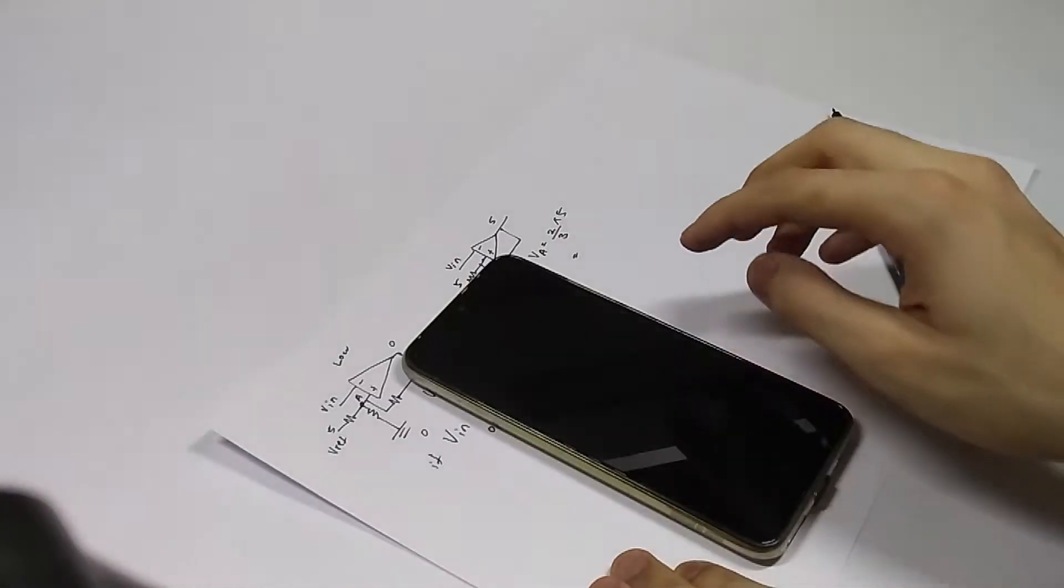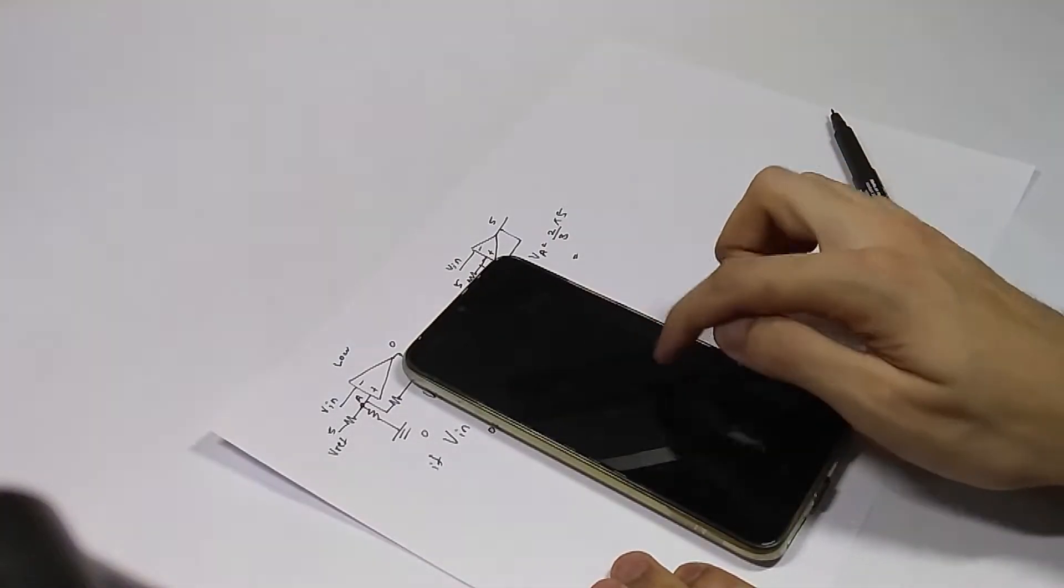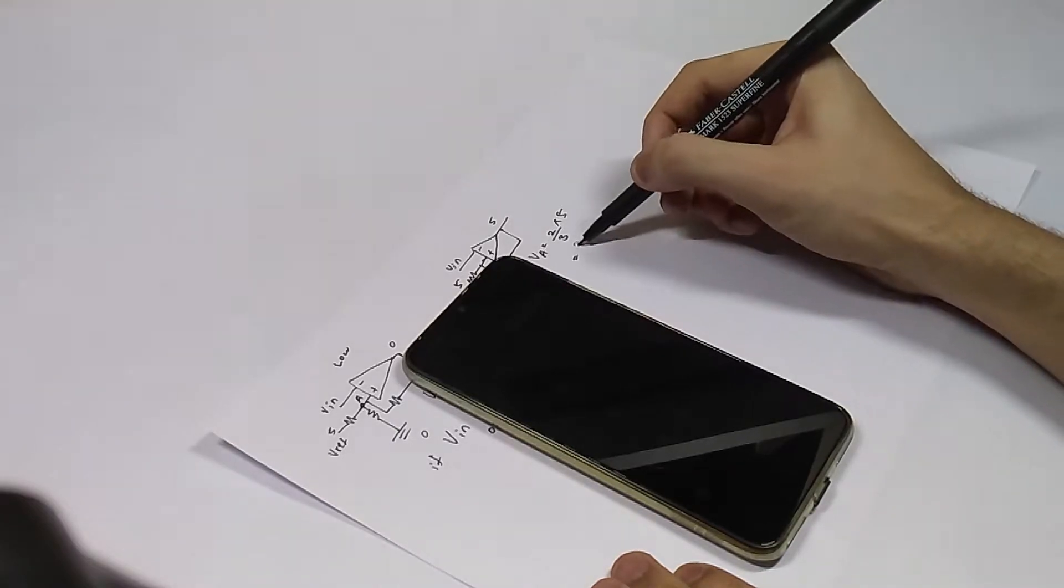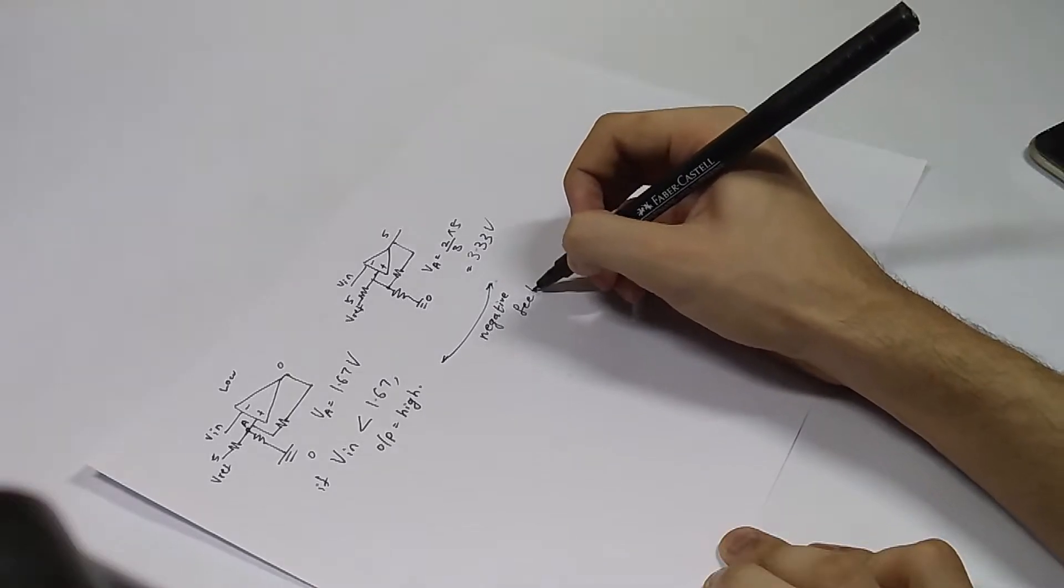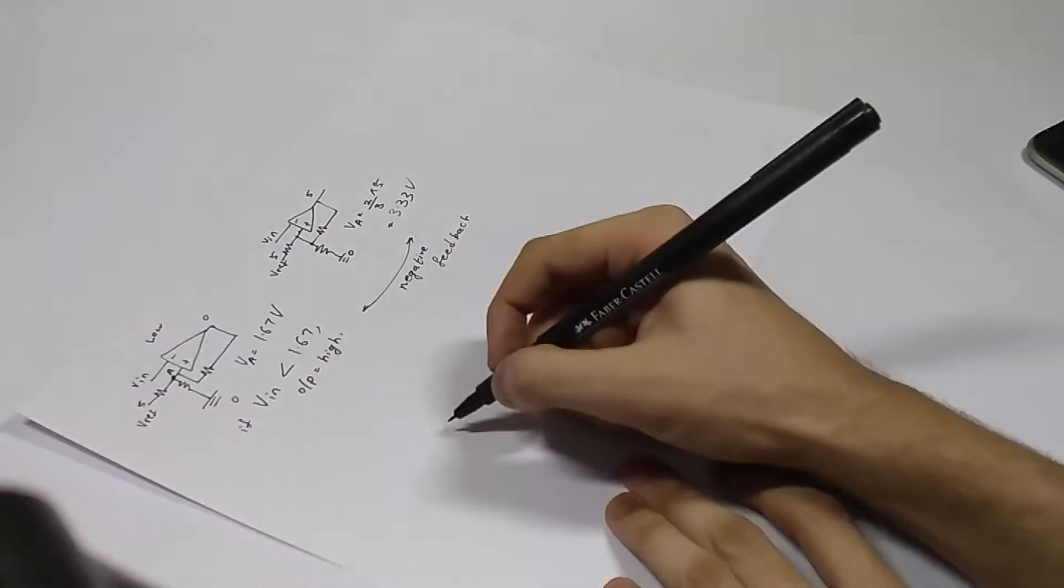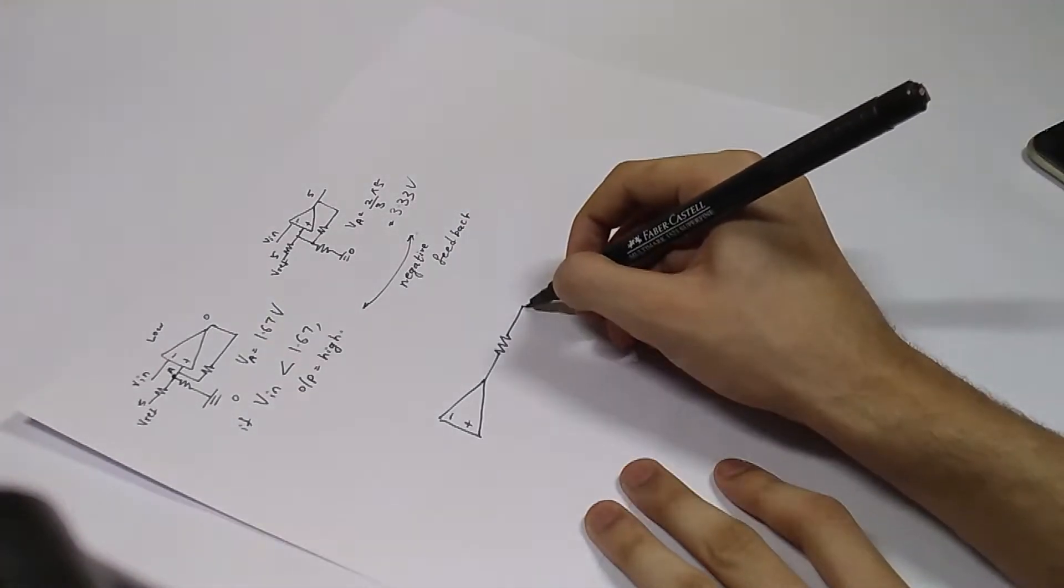This means for the Schmitt trigger to go low, the voltage on the inverting input must rise greater than 3.33 volts. This cycle constitutes a negative feedback system which is mandatory for any oscillator.